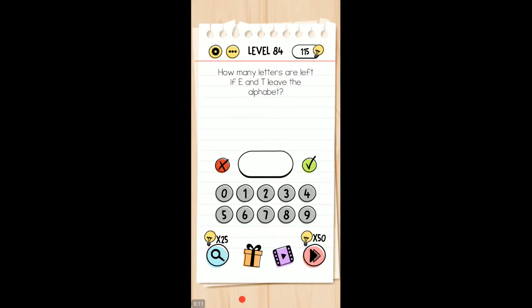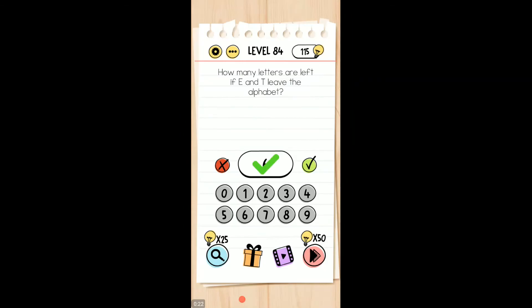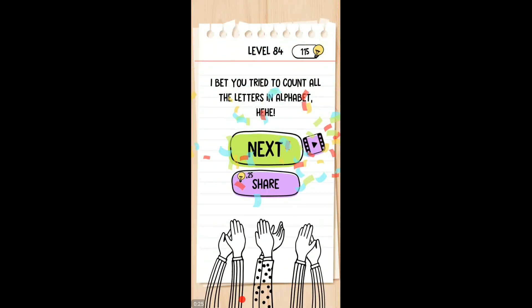Well, alphabet. You take out the T from alphabet and the E, and you have... six letters. Here we go. We took it out of the spelling of the word alphabet.